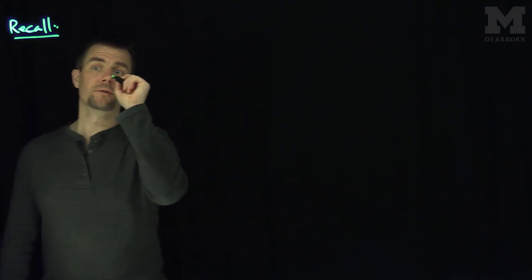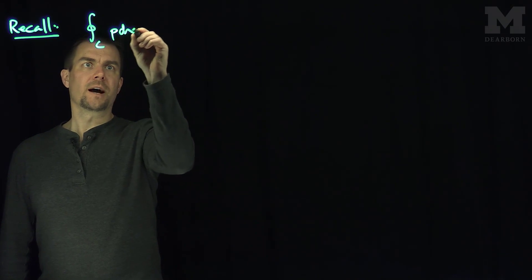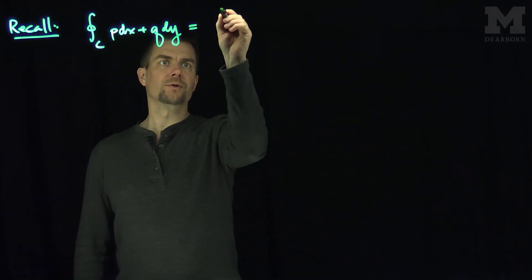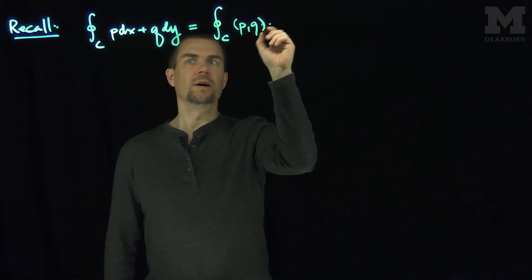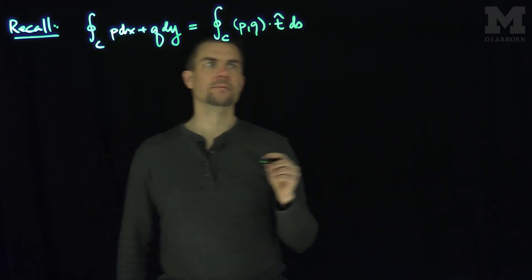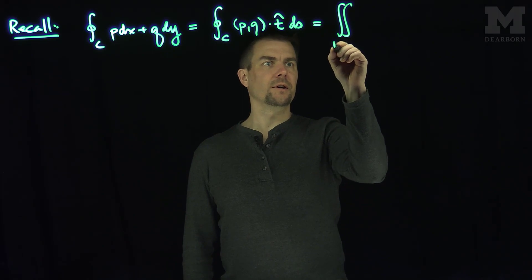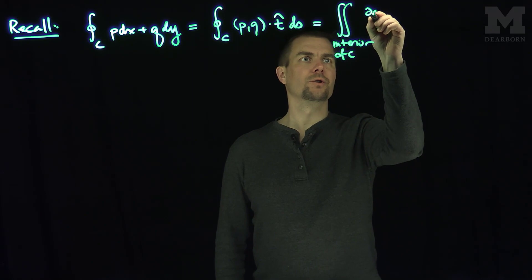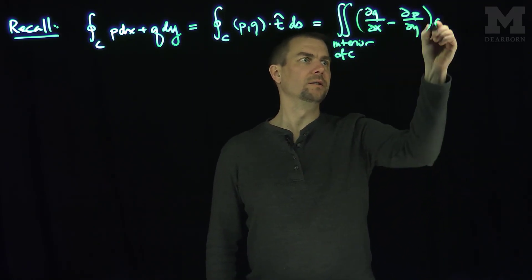Let's recall that Green's theorem, in standard form, asserts the following. It says that if I look at the flow integral, p dx plus q dy, which we can also sometimes write in this form that the flow of the vector field pq dot t hat ds is equal to the double integral over the interior of c of partial q partial x minus partial p partial y dA.